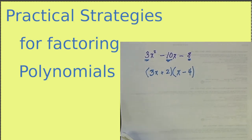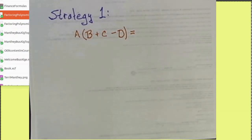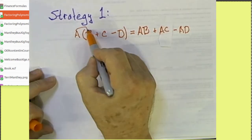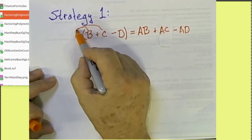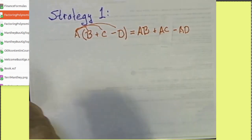And in fact, we will understand how to factor polynomials because we understand how to do multiplication. The distributive property of multiplication over addition and subtraction says that A times B plus A times C minus A times D.